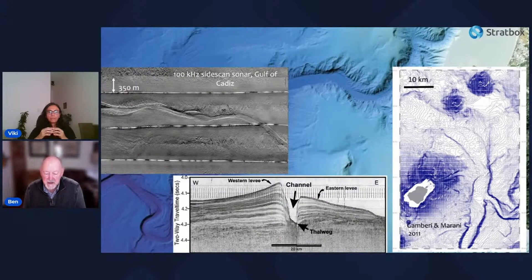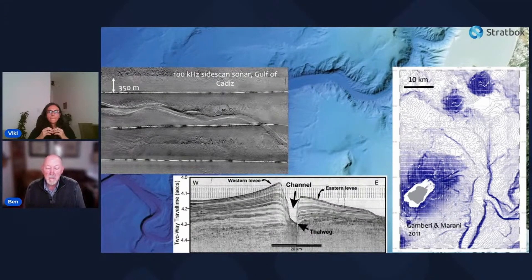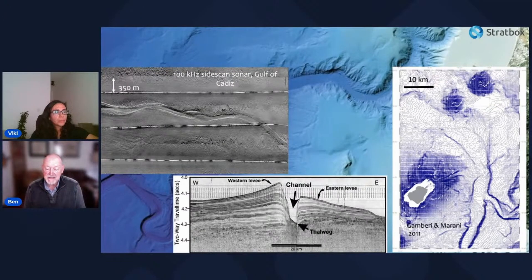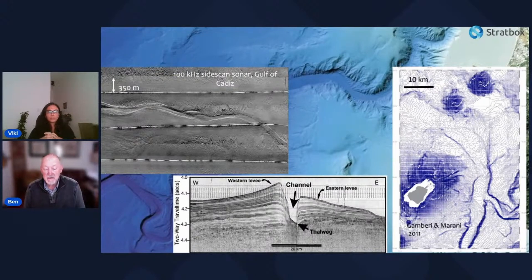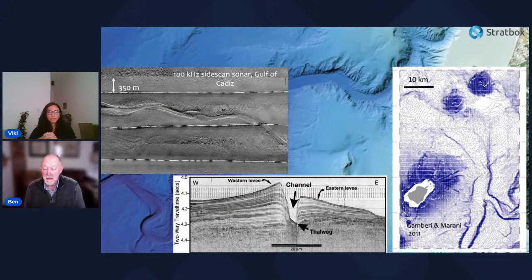What we see preserved in ancient successions are not the channels themselves but the channel fills, which form as the channel becomes progressively less effective as a bypass pathway. Since channels evolve and shift over time, the size and shapes of fills can bear little or no relationship to the size and shape of the parent channels.